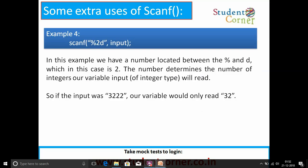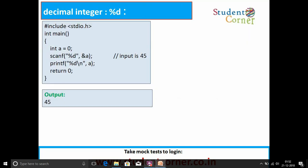Scanf percentage d, 2d input. In this example, we have a number located between the percentage and d, which in this case is 2. The number determines the number of integers our variable input of integer type will read. So if the input was 3, 2, 2, 2, 2, 2, our variable would only read 32.